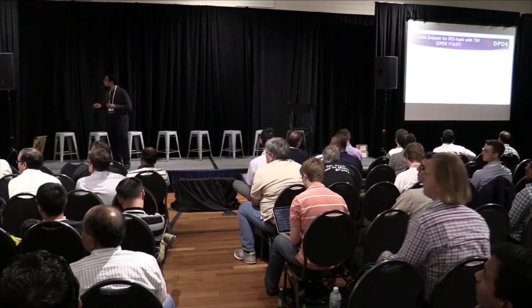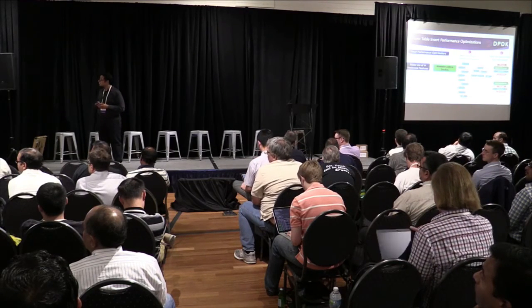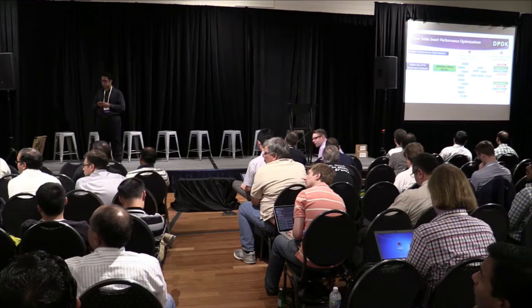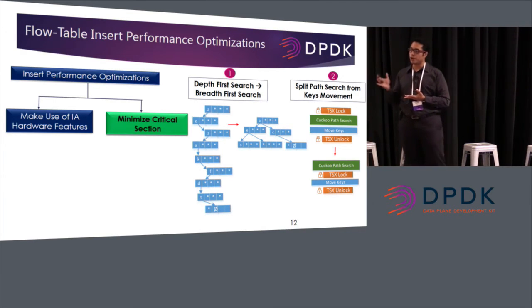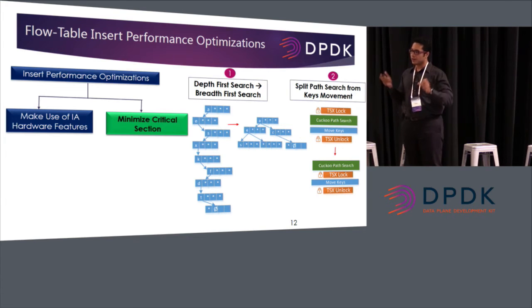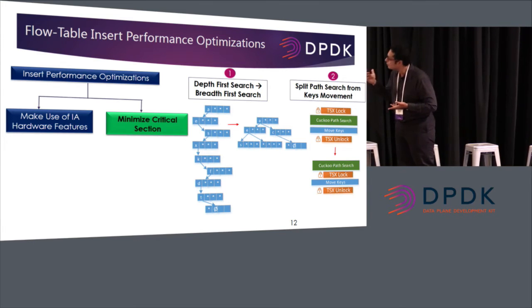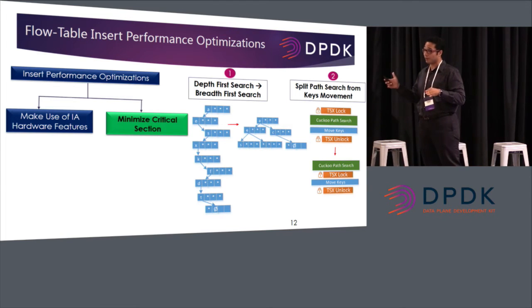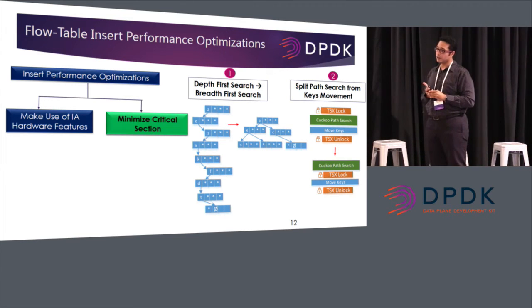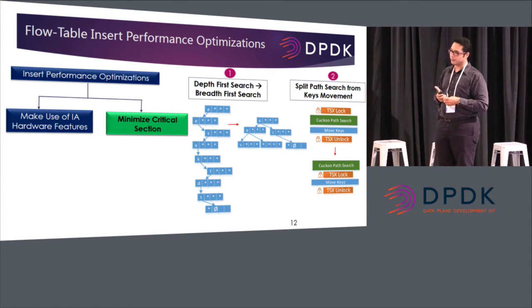Q: How was breadth-first search applied here, since cuckoo search naturally lends to depth-first search? A: With the RTE hash library, you can insert the key in multiple buckets — the current library can have four buckets. Instead of going depth-first for the first bucket, you go first bucket, second bucket, to the fourth bucket, doing a breadth-first search on all of them first before going into the second level. It's moving in breadth over the buckets instead of going into one bucket depth-first.